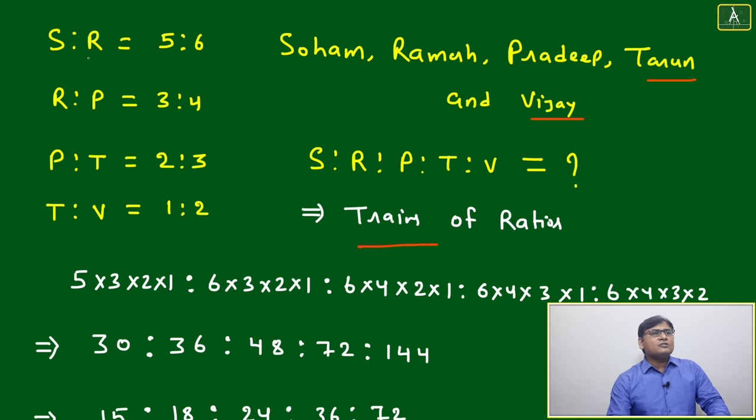Here Soham ratio Ramesh, Ramesh ratio Pradeep, Pradeep ratio Tarun, Tarun ratio Vijay - all ratios are given: 5:6, 3:4, 2:3, 1:2. It looks like a train of ratios. Then how to find the ratio of these five persons in terms of salary?